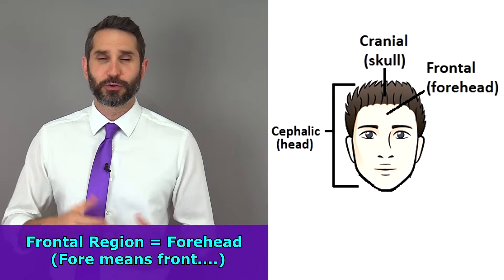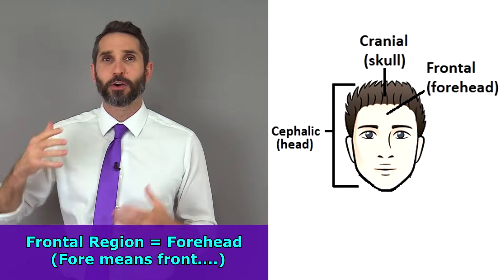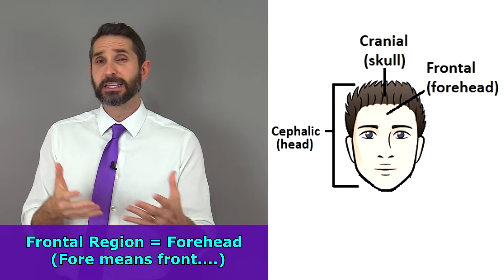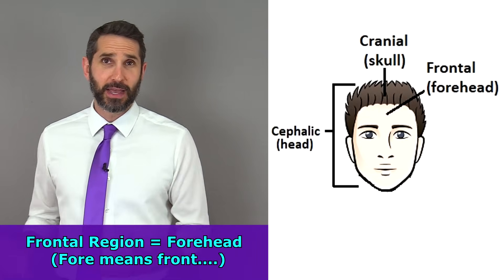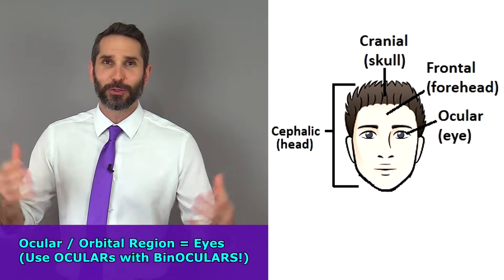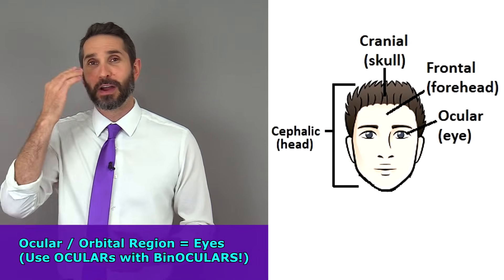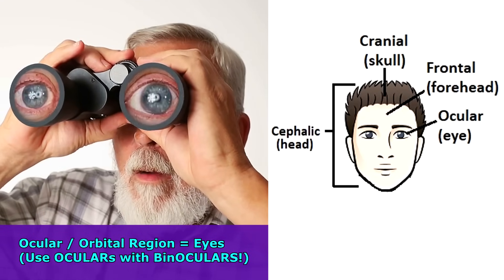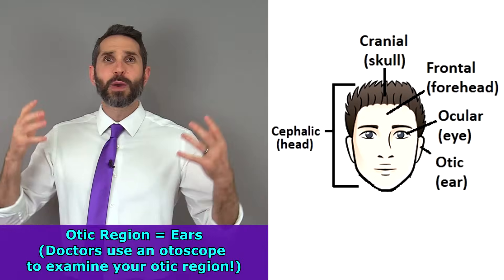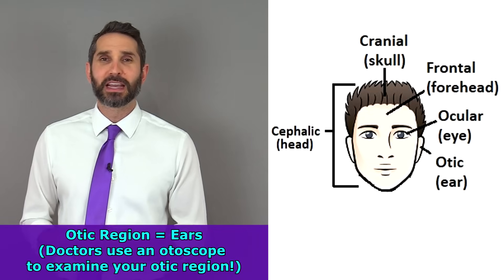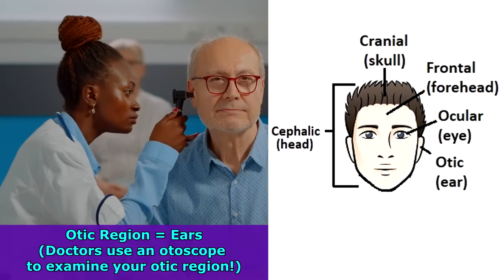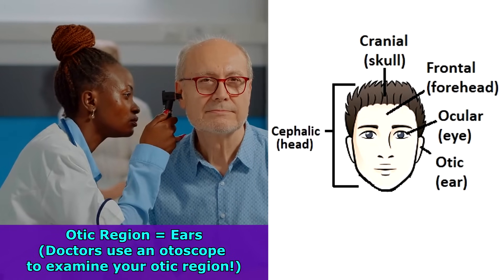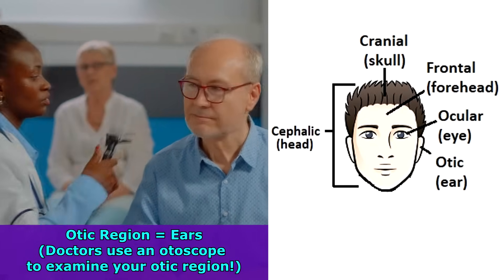The frontal region is the area of your forehead — easy to remember because another word for front is 'fore,' and it's your forehead or front of your head. The ocular region refers to the region of your eyes; you use binoculars to look at things with your ocular region. Otic refers to the ear region — if you ever have an earache, a doctor will use a device called an otoscope to inspect your otic area.